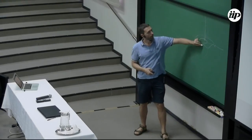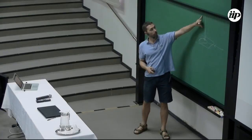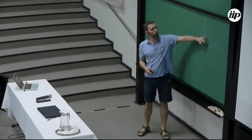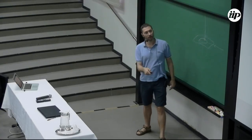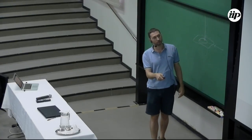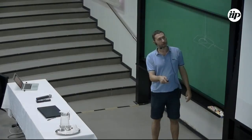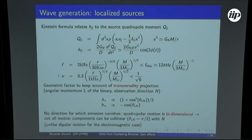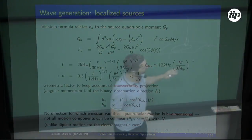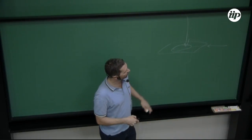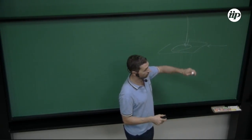If you look from this direction you're sensitive to the motion in the plane perpendicular to the view, so you're sensitive to all of the motion - then you have maximum sensitivity. If you're looking at 90 degrees you have the minimum sensitivity, but it's still not zero. These are two separate effects: this is the effect of the orientation of the detector with respect to the point in the sky where the binary is.